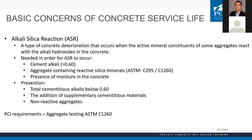Since we know the three components that must be present for ASR to occur, we know how to prevent it. Preventions of ASR: we can use a total cementitious alkalinity below 0.60. We can blend a higher alkali cement with slag, fly ash, or other materials with lower alkalinity to bring our total down. We can use supplementary cementitious materials — fly ash, silica fume, metakaolin, slag — to mitigate this property. And we can choose non-reactive aggregates.